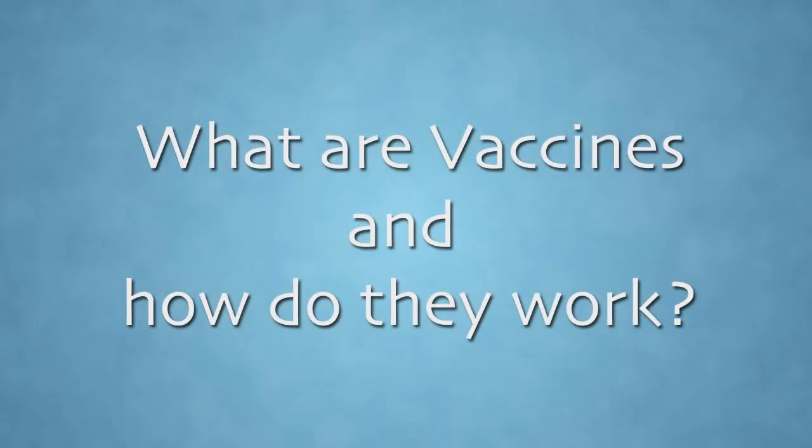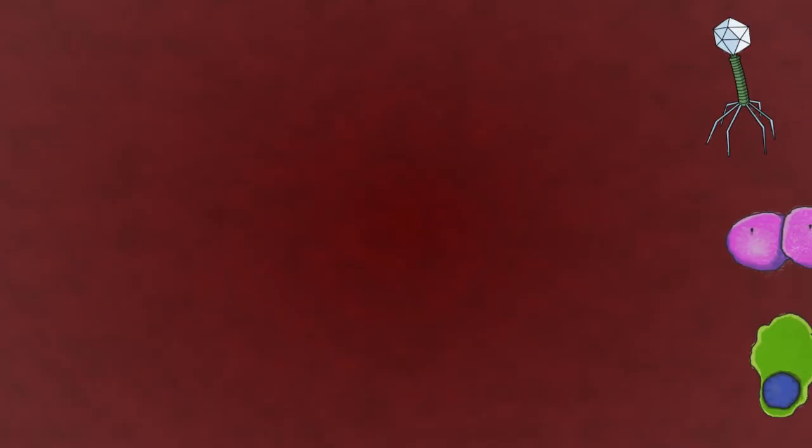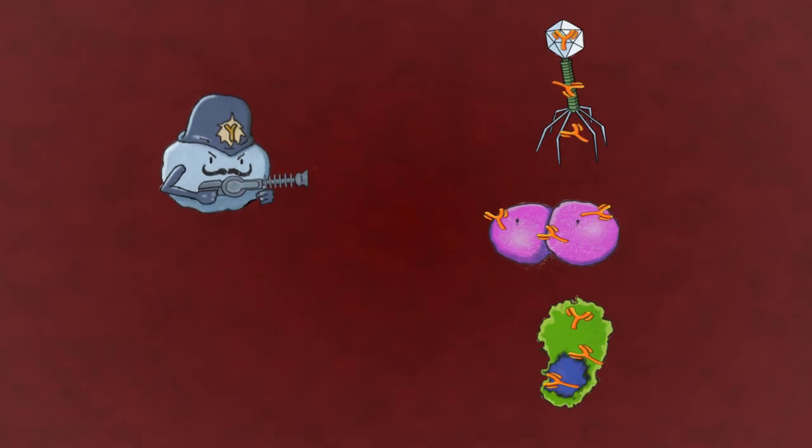What are vaccines and how do they work? When viruses or bacteria enter the body, our immune cells, also called lymphocytes, produce antibodies to neutralize the effect of these foreign invaders.